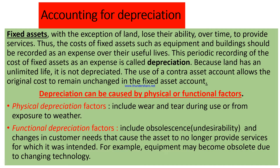When we come to accounting for depreciation: fixed assets, with the exception of land, lose their ability over time to provide services. The cost of fixed assets such as equipment and buildings should be regarded as an expense over their useful life — this process is called depreciation. Because land has an unlimited life, it is not depreciated. The use of a contra-asset account allows the original cost to remain unchanged in the fixed assets account.